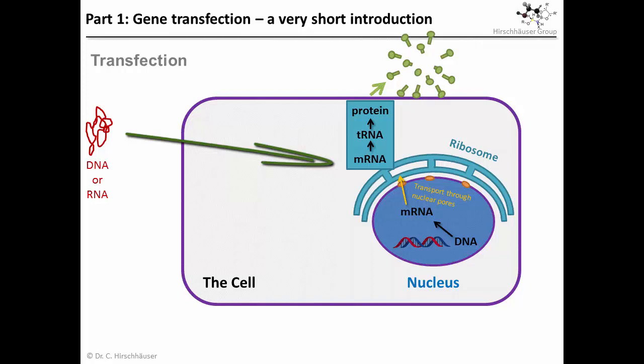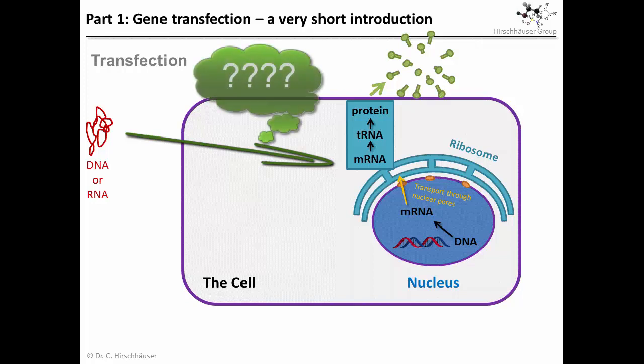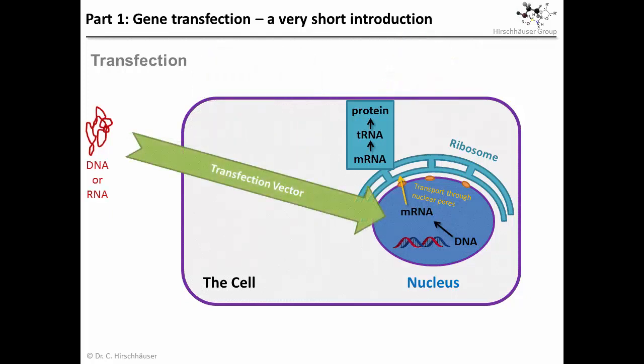However, there is still a problem: how do we get the DNA molecules into the cell? And more precisely, how do we get it exactly to the right location inside a cell? It is exactly that process which is called gene transfection. The tools that we use for it are called transfection vectors — they smuggle the DNA or RNA molecules to just the right location inside the cell, so that its code can be read and fed into the protein synthesis pipeline.